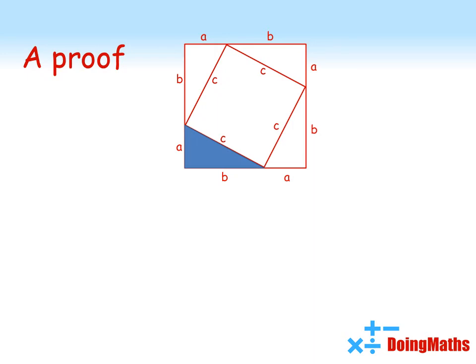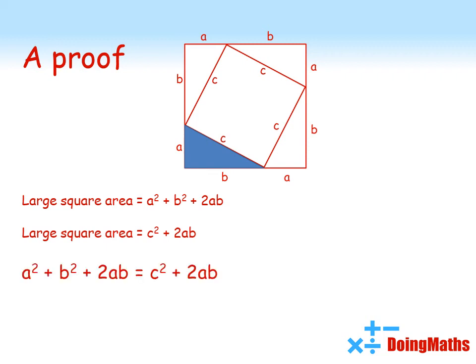So we've got the area of our square now written in two different ways. We've got a squared plus b squared plus 2ab by using the large square. We've got c squared plus 2ab by using the five separate shapes put together. As these are both the area of the whole thing, they're equal to each other.